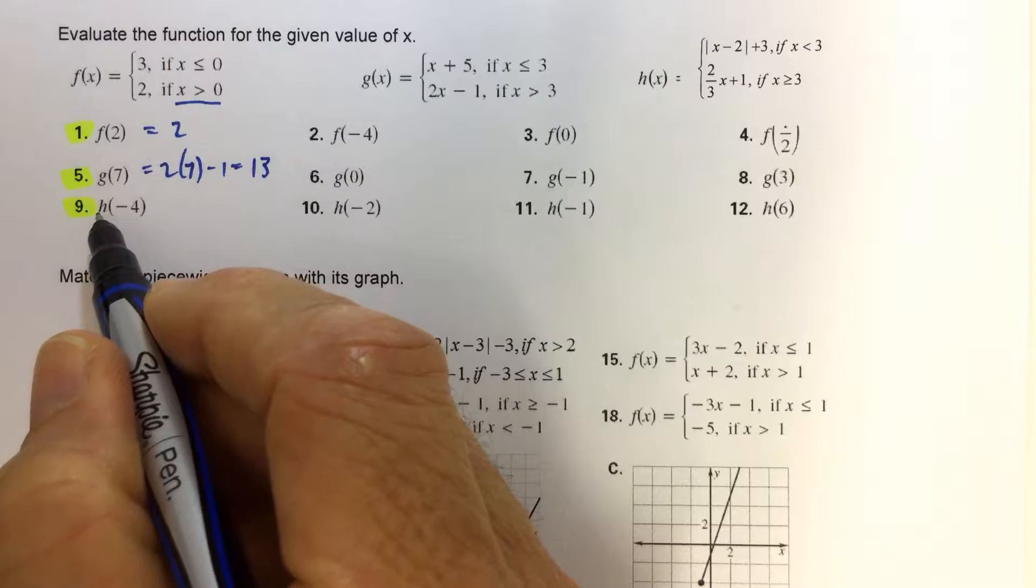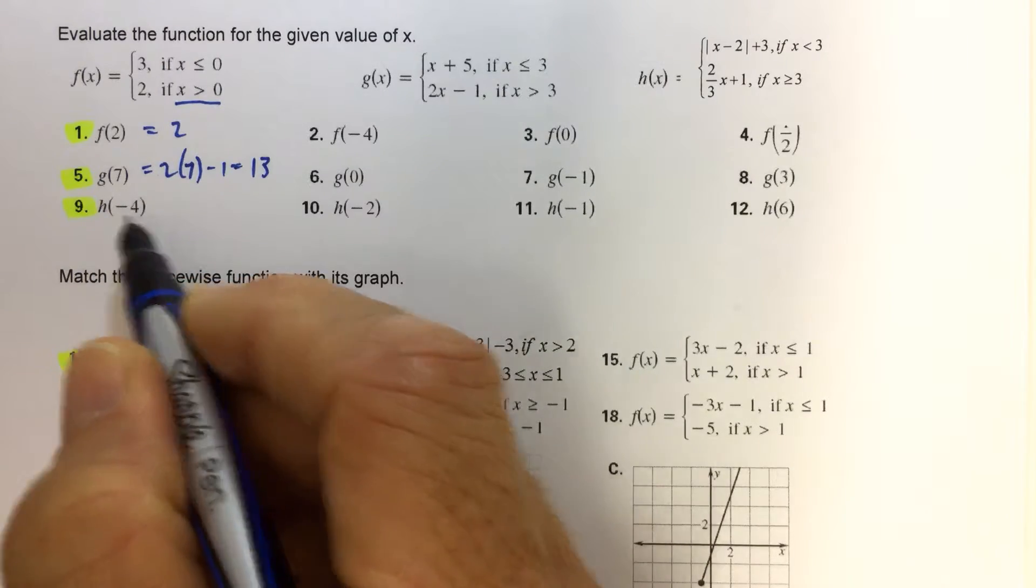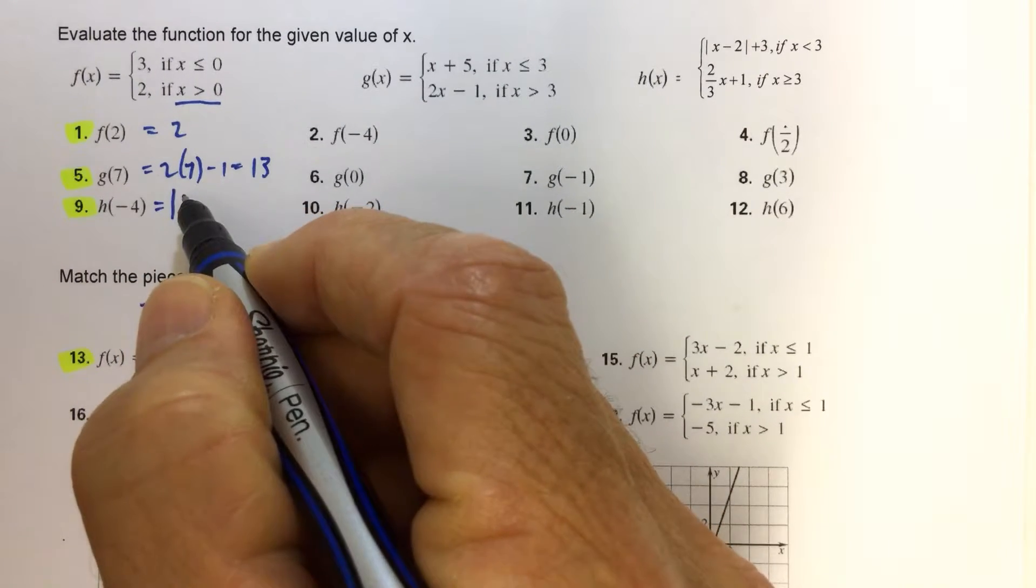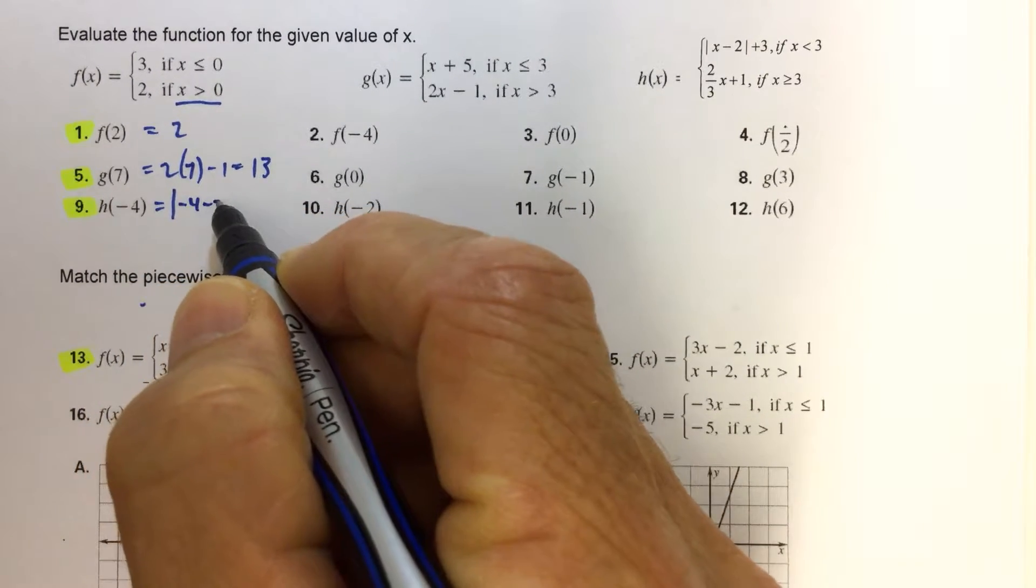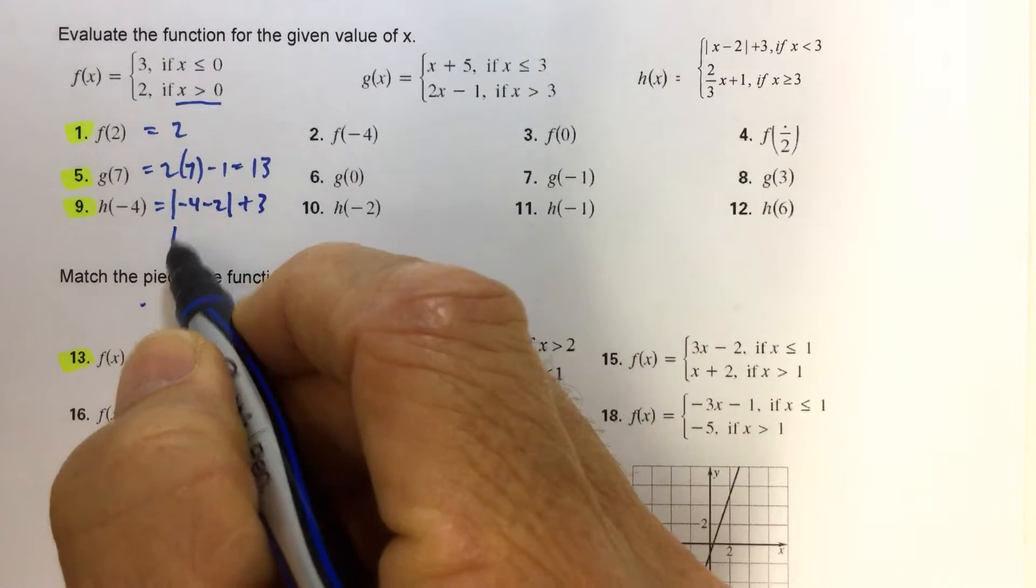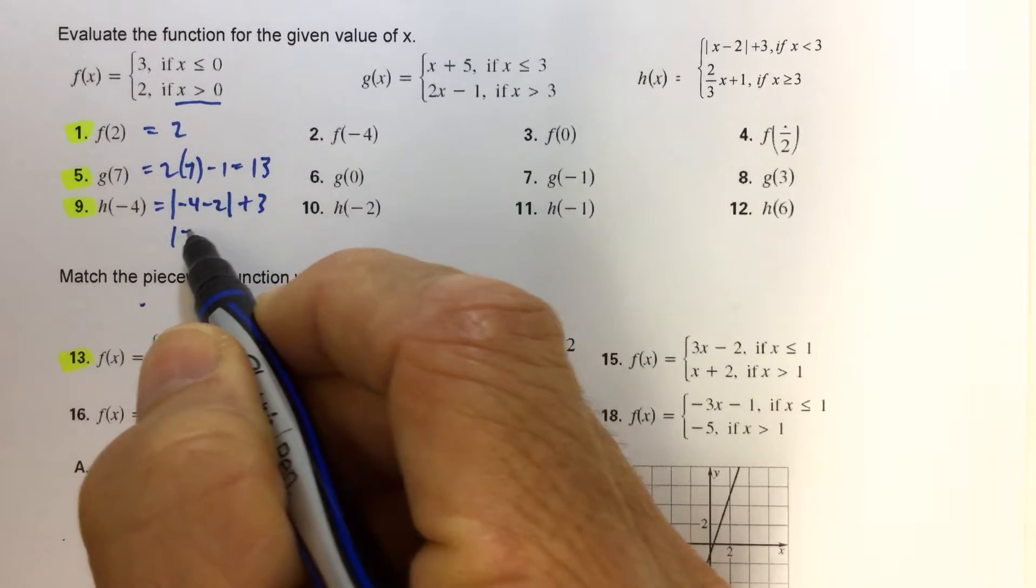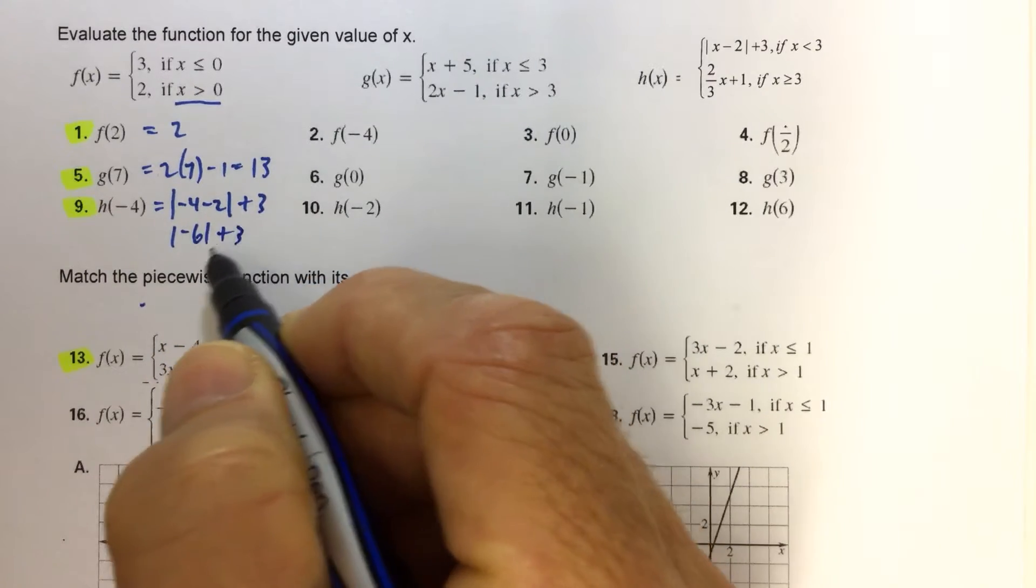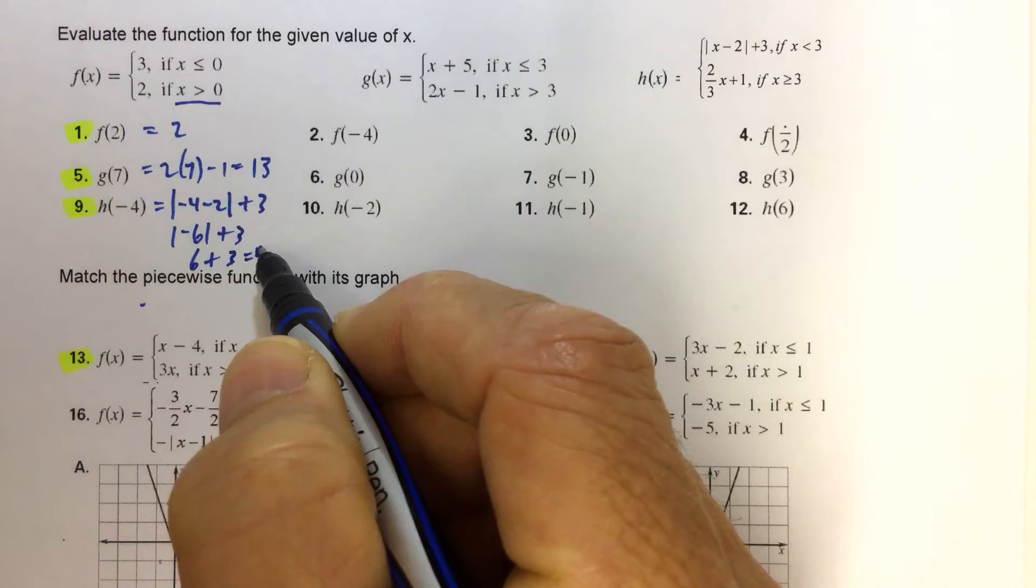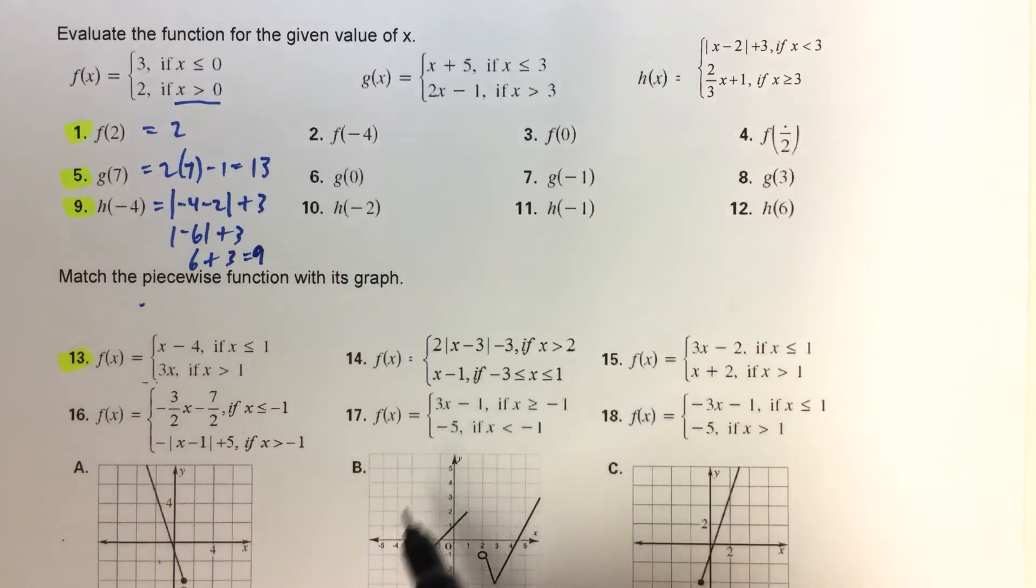And then we want to find the value of h of negative 4. Well, negative 4 is less than 3, so we plug a negative 4 in place of the x in the first piece of that piecewise function. And we know that negative 4 minus 2 is negative 6. The absolute value of negative 6 is 6, and 6 plus 3 equals 9. So h of negative 4 is 9.